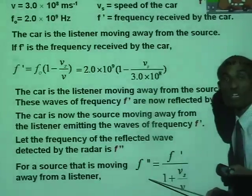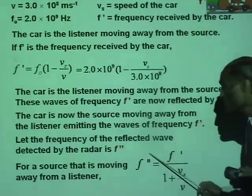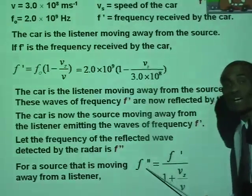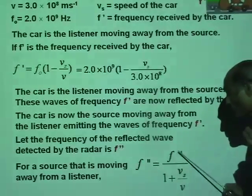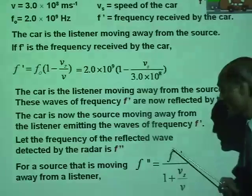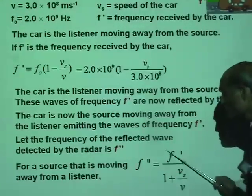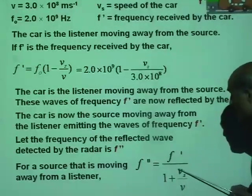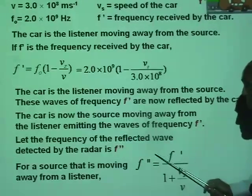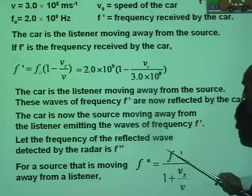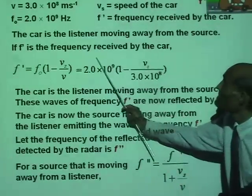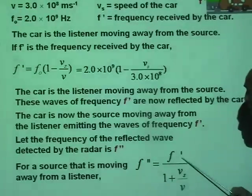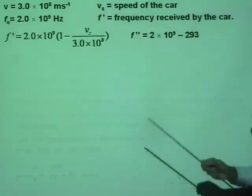We now replace F′ in the second equation with the expression from the first stage. F′ equals F₀ times (1 minus V_s over V). So in the equation for F″, we substitute this value of F′ to combine both stages into a single expression. This will be done in the next slide.